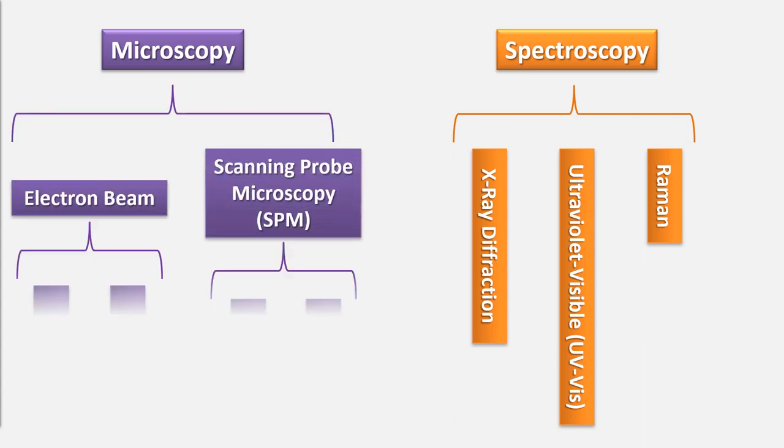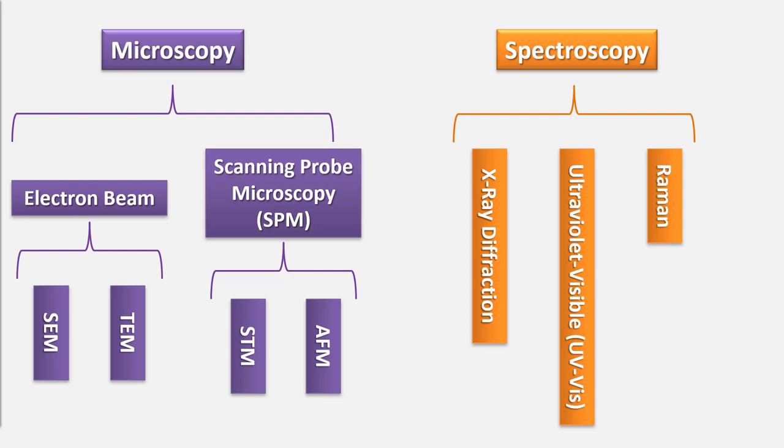Regarding microscopy, available instruments can be divided into two main categories depending on working principles. One category is based on electron beams, like scanning electron microscope and transmission electron microscope. Besides these techniques, some of the most used and practical techniques in nanotechnology measurements are based on using a very tiny probe, called scanning probe microscopy. Instruments like scanning tunneling microscope (STM) and atomic force microscope are some of those instruments.